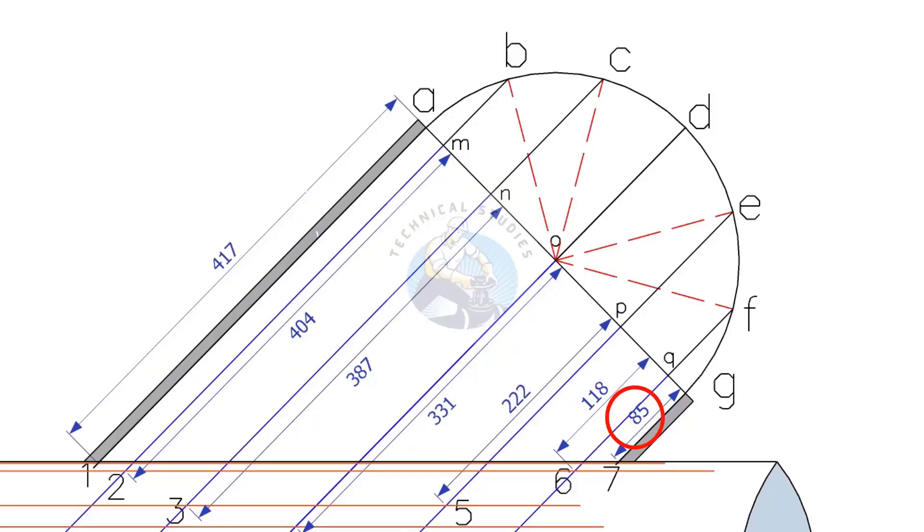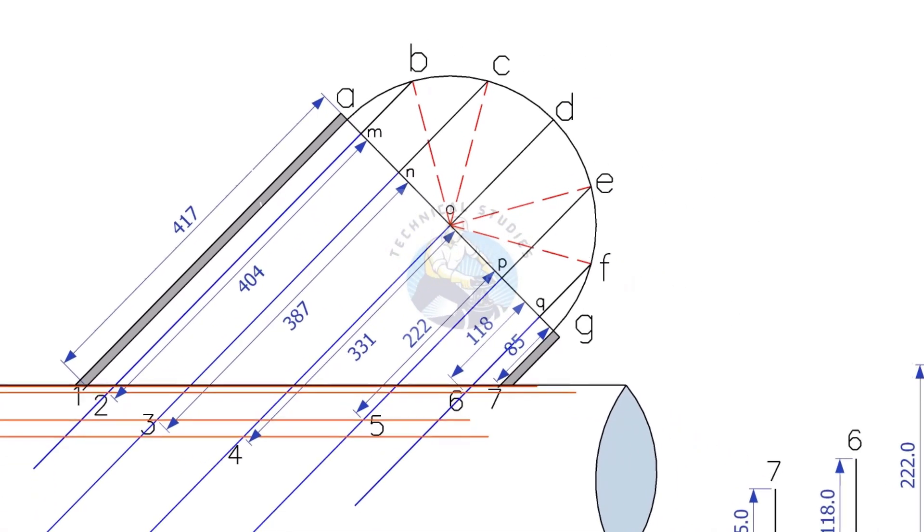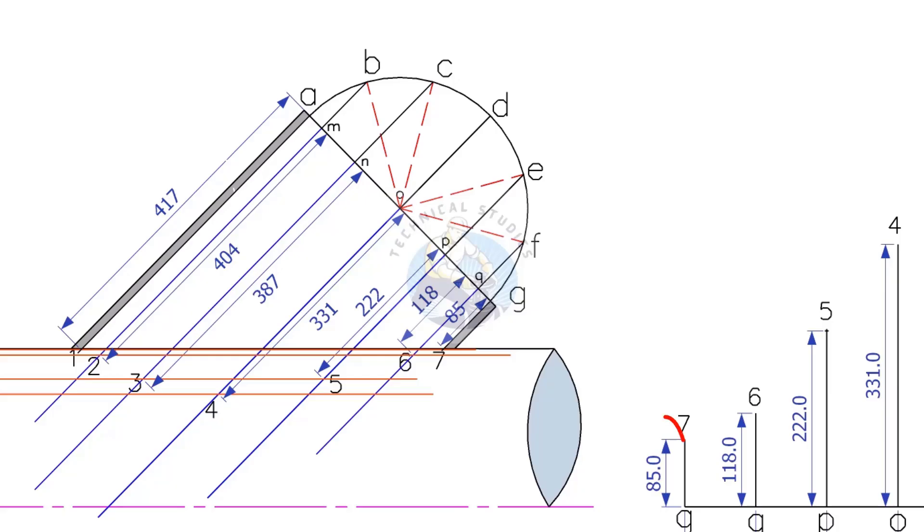Note the length G7, that is 85 mm, and draw a line vertically on the starting of the circumference line as shown.